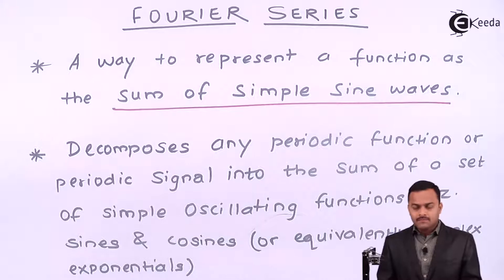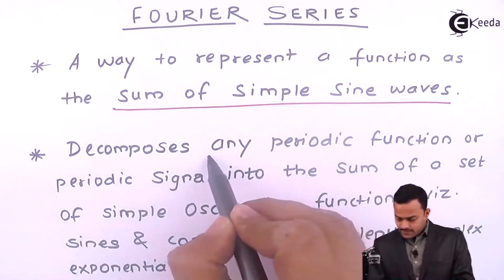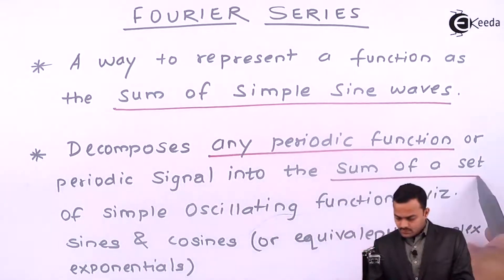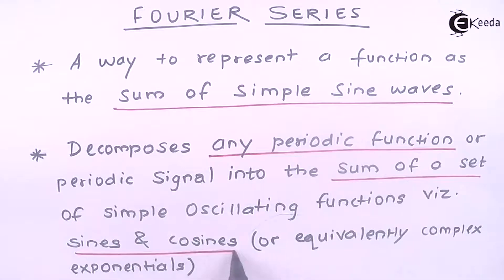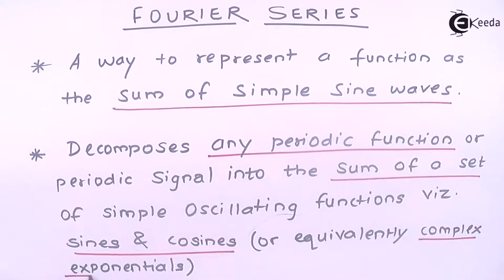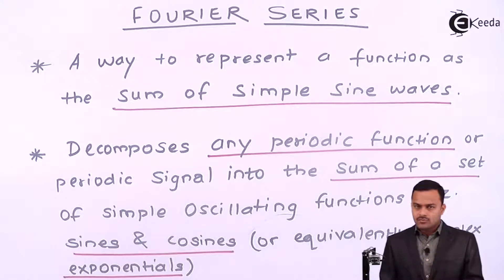We can represent any periodic function as a sum of a set of sines and cosines, popularly known as complex exponentials, because we know any complex exponential by Euler's identity can be written in terms of sine and cosine.